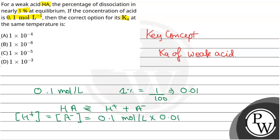The concentration of H+ will be obtained by multiplying initial concentration with dissociation: 0.1 × 0.01, which gives us 0.001 mol per liter. Now we need the equilibrium concentration.